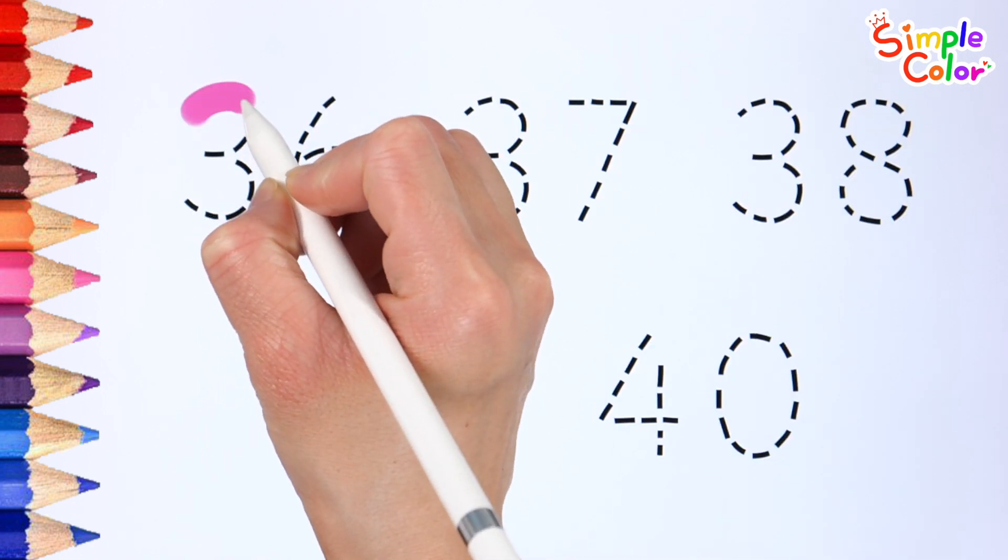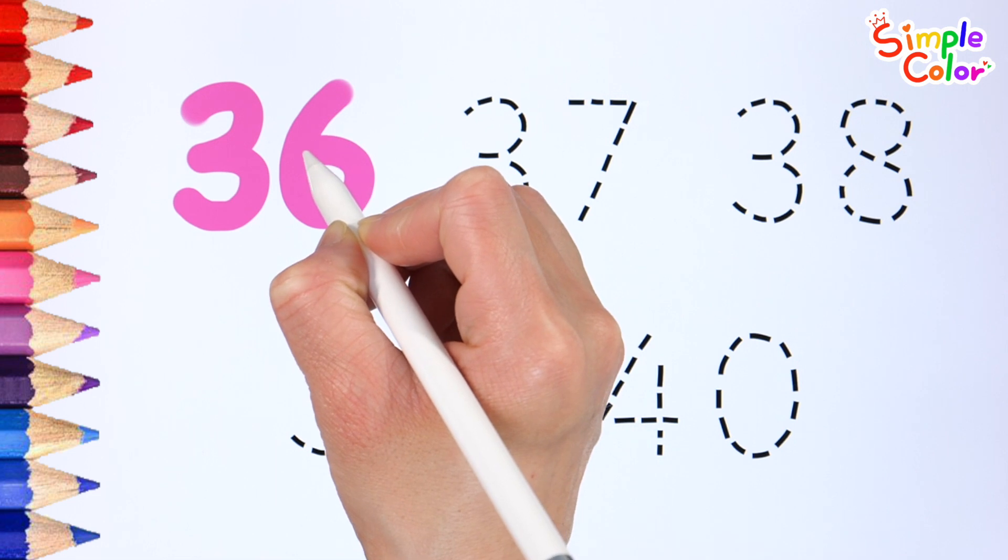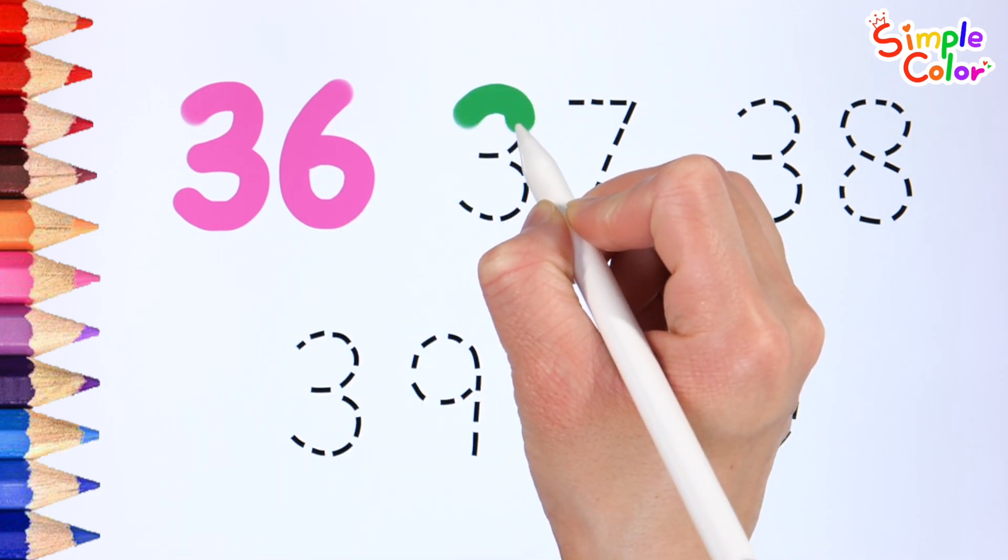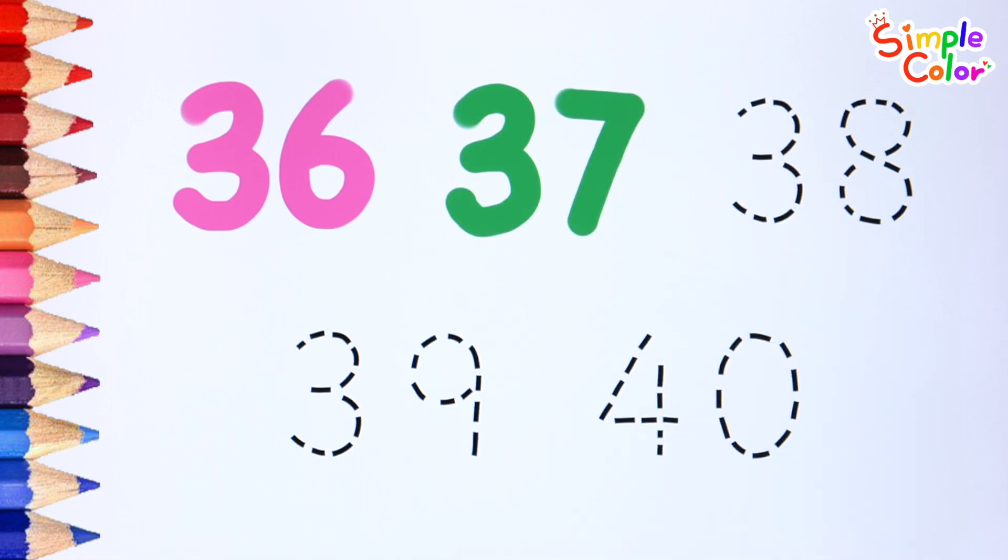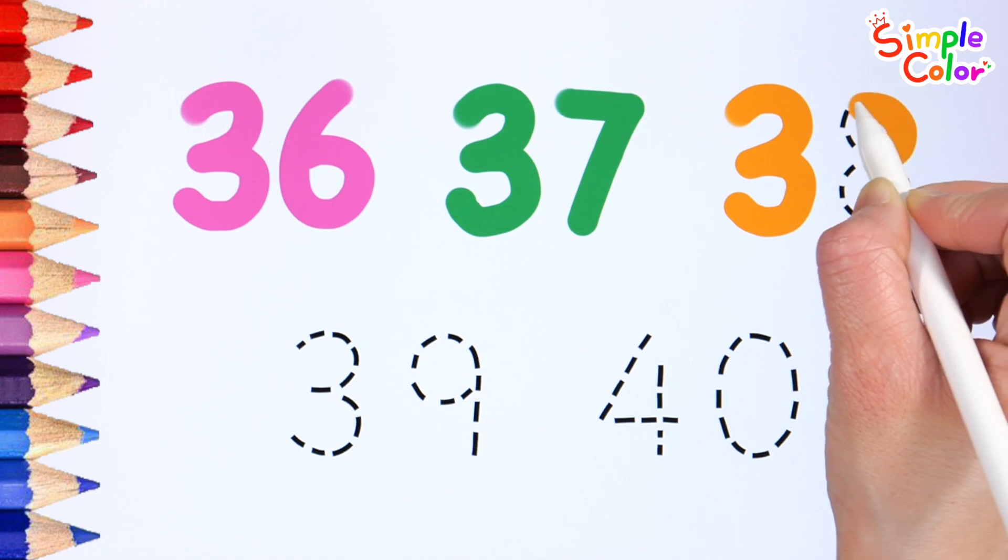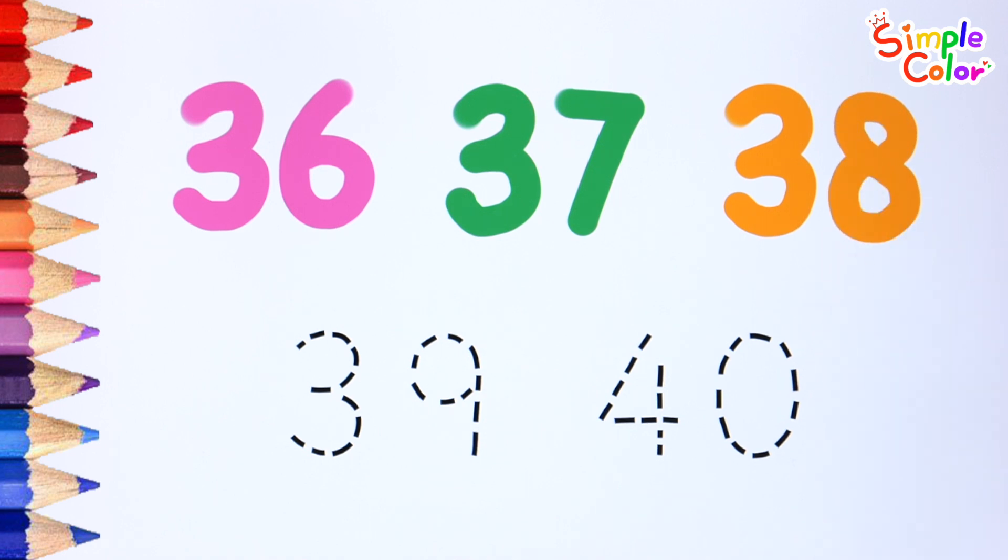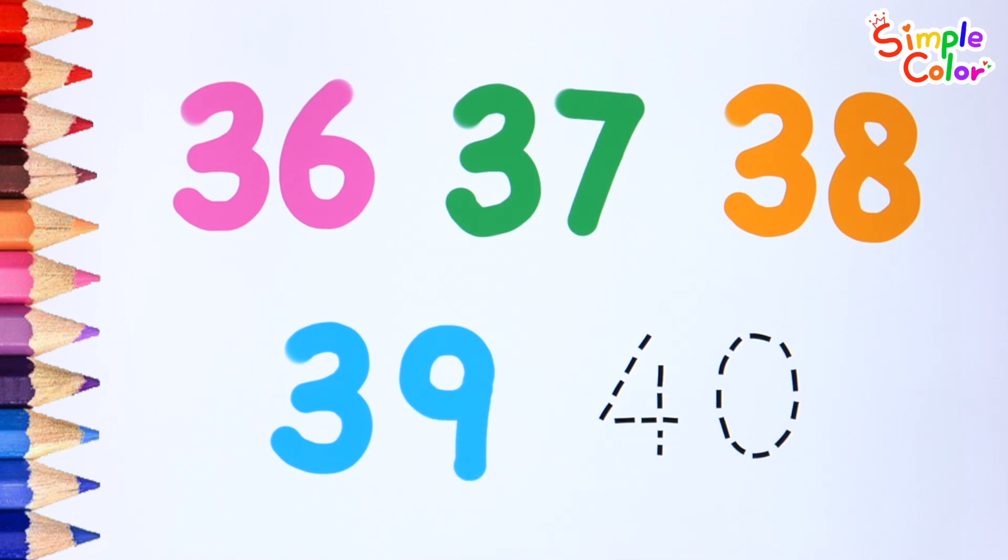Let's write numbers 36 to 40 along the dotted line. 36, 37, 38, 39, 40. Very good.